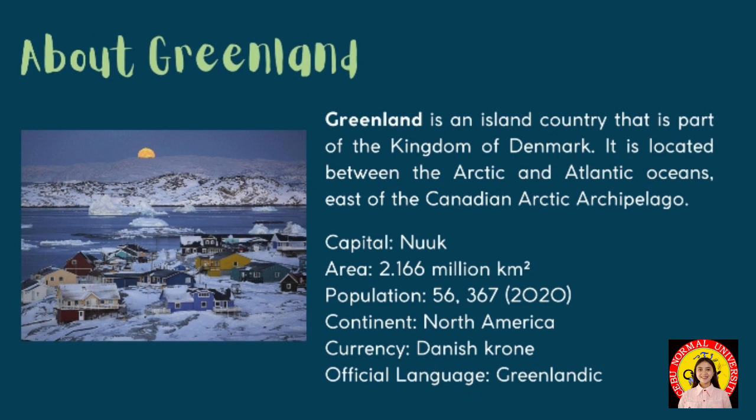The ice sheet covers over four-fifths of Greenland's total land area. The capital of Greenland is called Nuuk, and Greenland has a total area of 2.166 million square kilometers. According to the World Bank, in the year 2020, Greenland has a total population of 56,367. Greenland is under the continent of North America, with the Danish krone as their currency and Greenlandic as the official language.